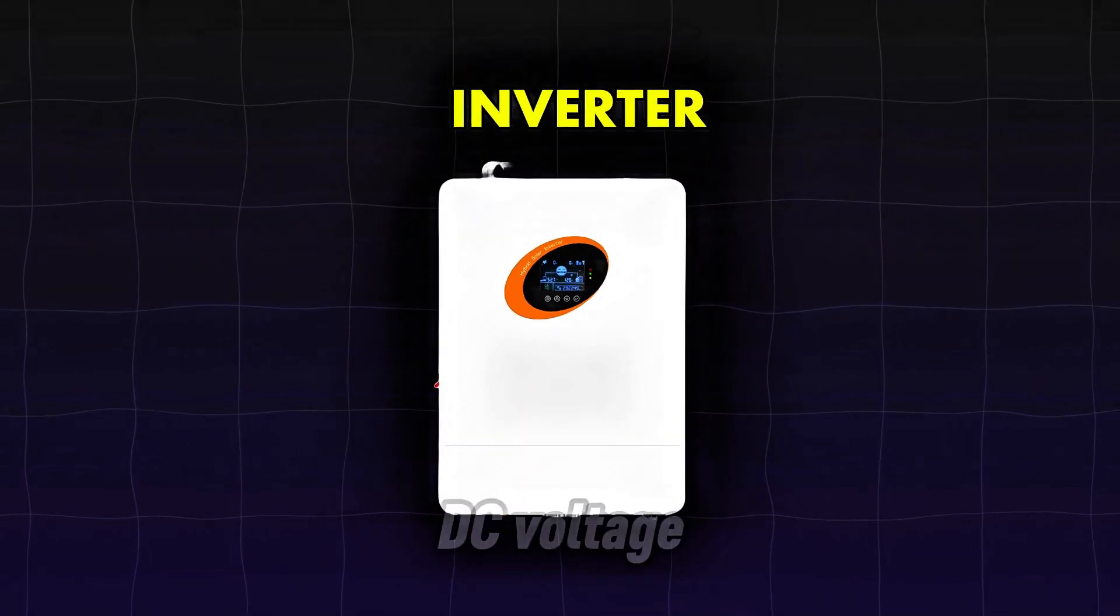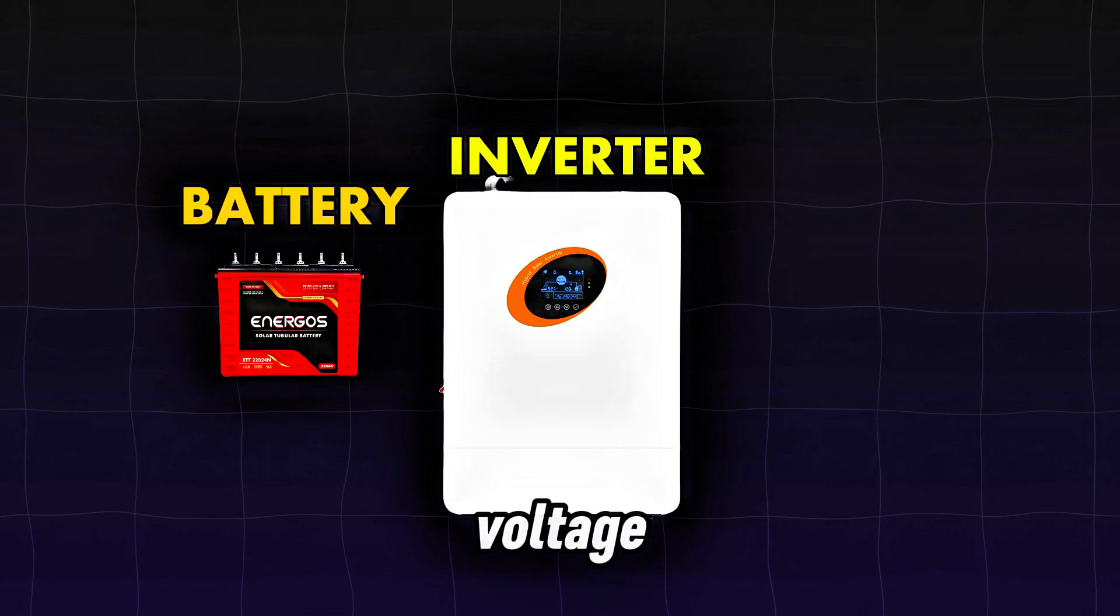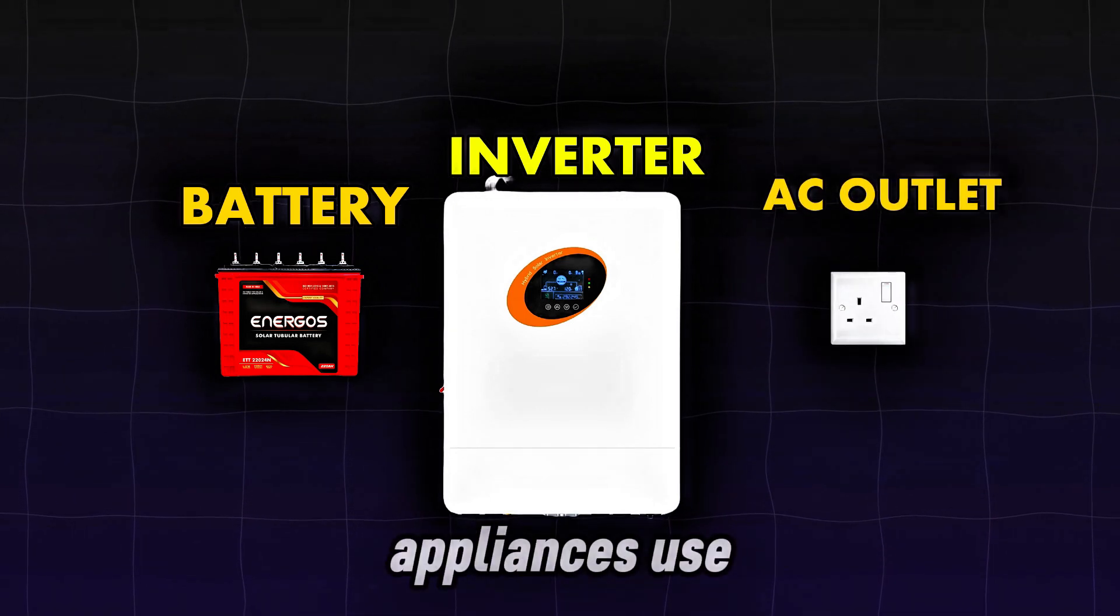An inverter is a device that converts a DC voltage, known as a battery voltage, into AC voltage, which is the type of voltage your home appliances use.